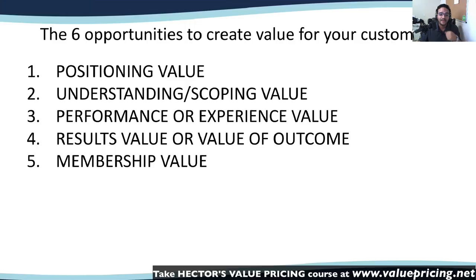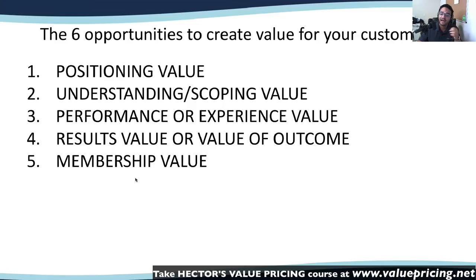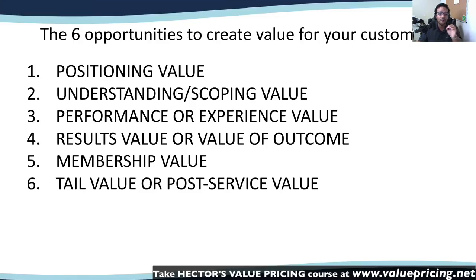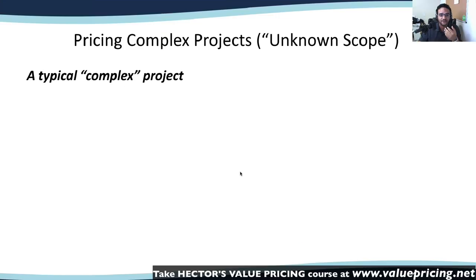The fifth opportunity is membership value — how it feels to be part of that business, to do business with that person, to be part of that group. Why do people go to Harvard? There are many other universities that give you the same education for half or a third of the price. People go because of membership value — the alumni association, the bragging rights. You need to have membership value in the services you provide; people need to be proud to be working with you and your firm. The sixth is tail value or post-service value — how people feel about the value they can get from working with you way after the service is done. Will this person be in business and available 10 years from now when I need to ask about something we did together? That's an important opportunity at the tail end.